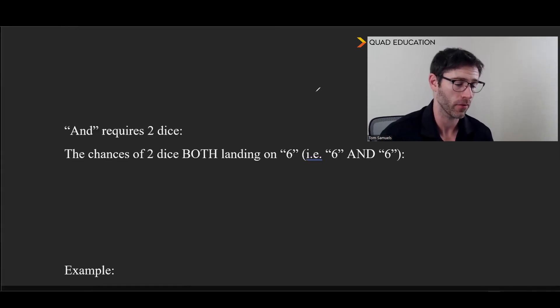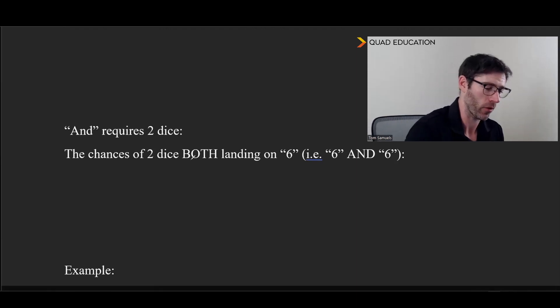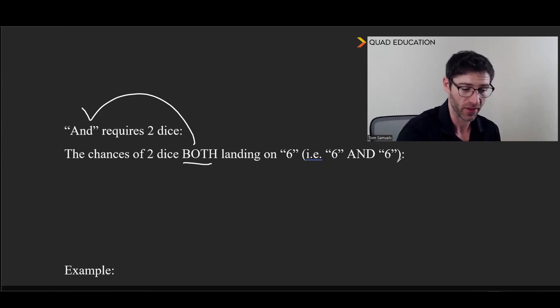So now let's talk about the word 'and'. For this example, we're going to use two dice to really illustrate what 'and' can mean. This is also what I mentioned about the word 'both' is the same thing as 'and'. So the chances of two dice, when you roll them at the same time, both landing on six, which is to say six and six. So there's a six and then there's another six. What we're going to note here is that when you have two dice, there's six things that can happen for each one.